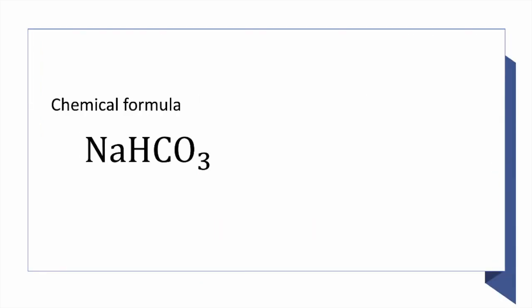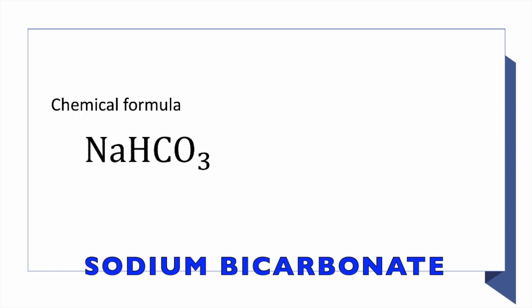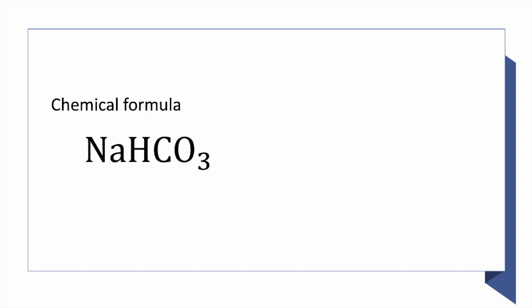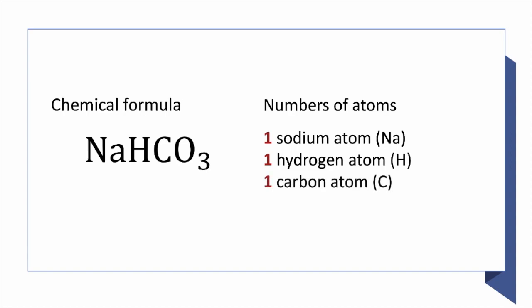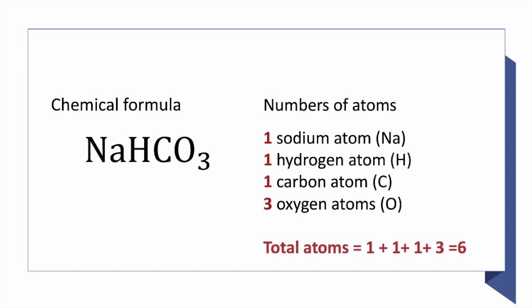Now let's do sodium bicarbonate, otherwise known as baking soda. We don't have a subscript next to the Na, so that is one sodium atom. We also don't have a subscript next to the H, so we have one hydrogen atom. There's no subscript next to the C either, so that means there's only one carbon atom. But we do have a subscript 3 next to the oxygen, which means we have three oxygen atoms.